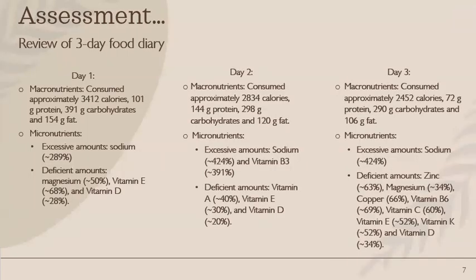A review of Jane's three-day food diary, which was entered into Cronometer, revealed that Jane is overconsuming in all categories of calories, protein, carbohydrates, and fat. On day one, she was consuming 3,412 calories, 101 grams of protein, 391 grams of carbs, and 154 grams of fat.